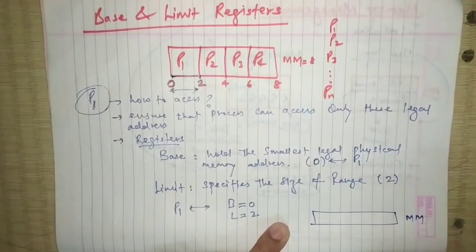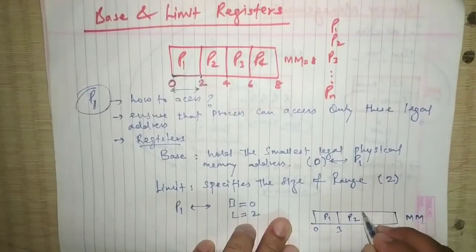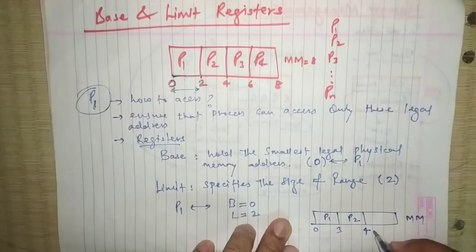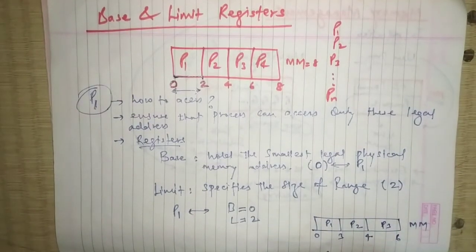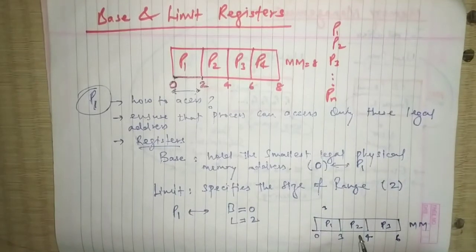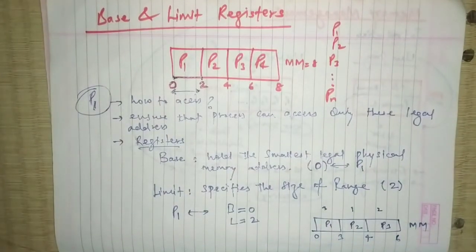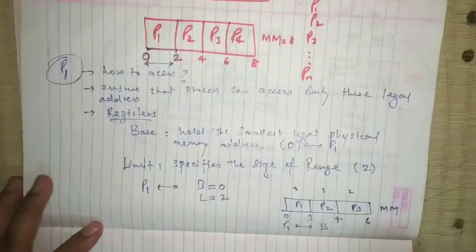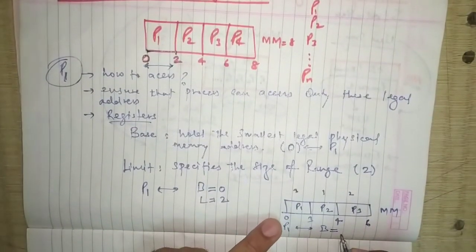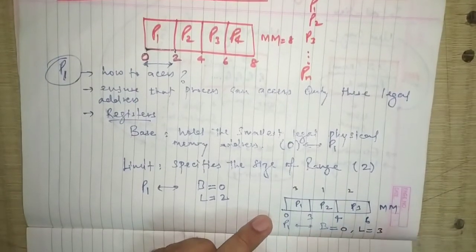Now let's take another example with a new main memory layout. For process P1 we have addresses from 0 to 3, for process P2 we have 3 to 4, and for process P3 we have 4 to 6. So P1 has taken 3 units, P2 has taken 1 unit, and P3 has taken 2 units. For P1, the base register will hold zero and the limit register will hold 3.